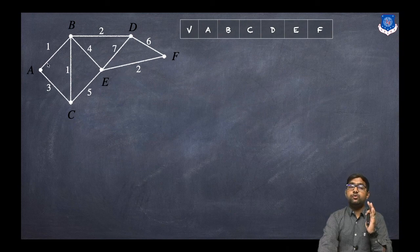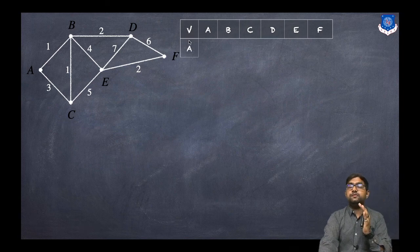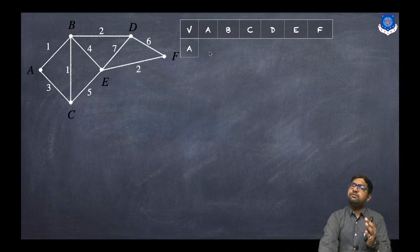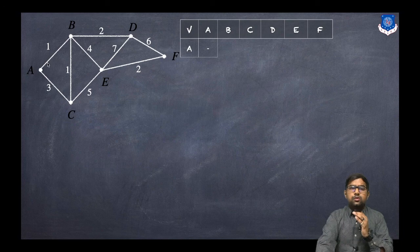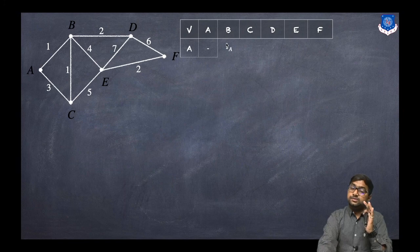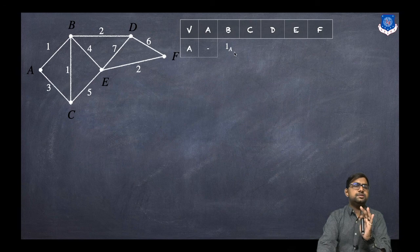We want to find the shortest path from A to F, so we will start from A. In the first row, the first vertex will be A. What is the minimum distance from A to A? Obviously it will be zero, so we will put a dash. What is the distance from A to B? That is 1, so we will write 1 via A — that is 1A.